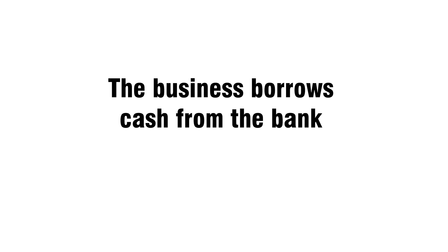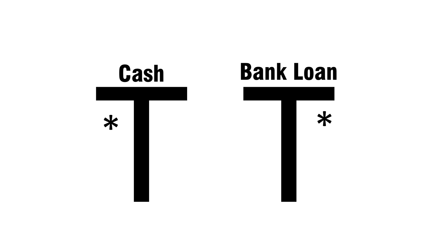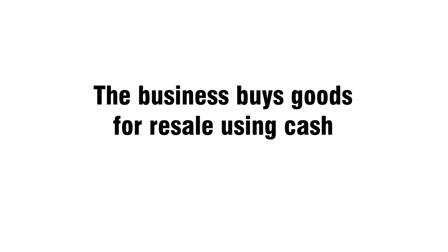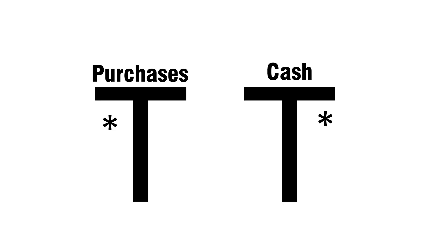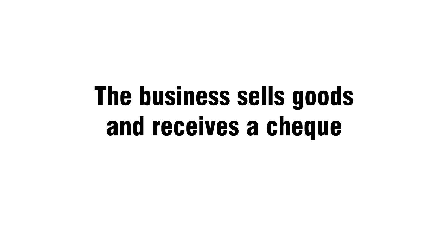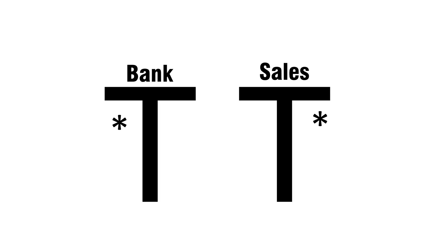The business borrows cash from the bank: debit cash, credit bank loan. The business buys goods for resale using cash: debit purchases, credit cash. The business sells goods and receives a check: debit bank, credit sales.